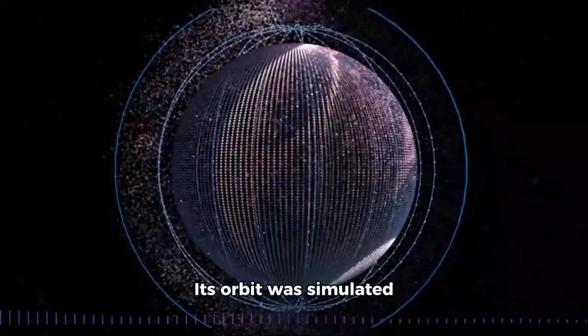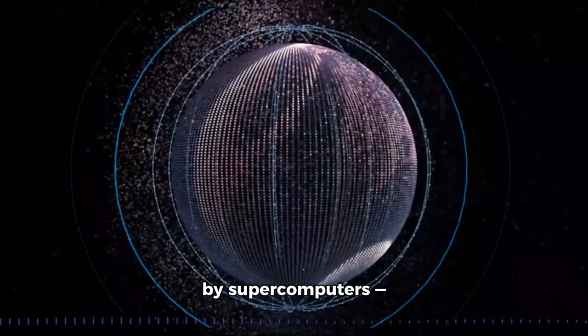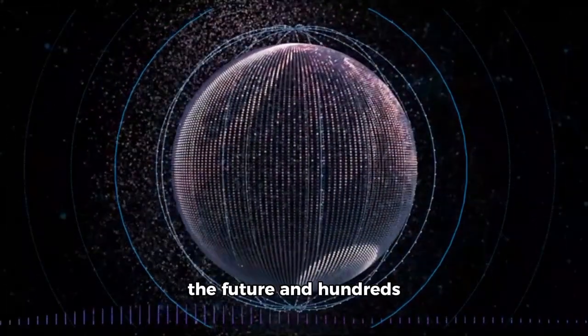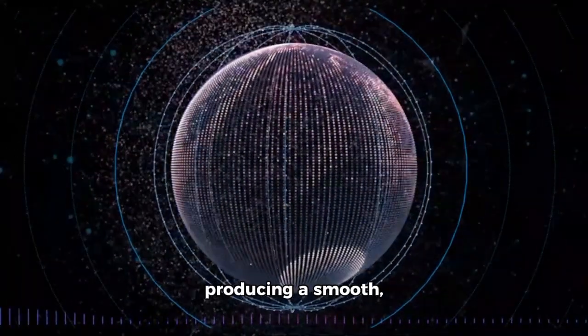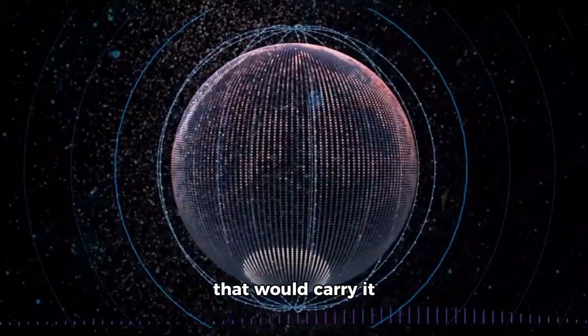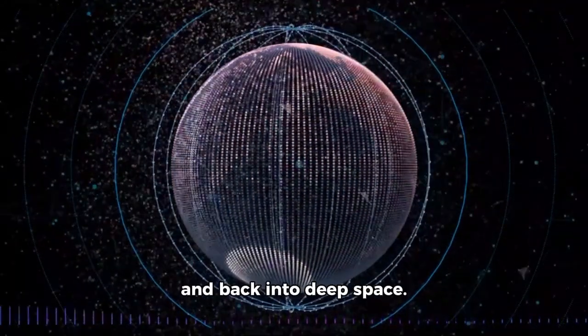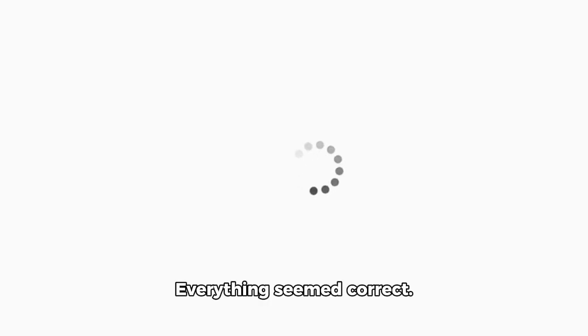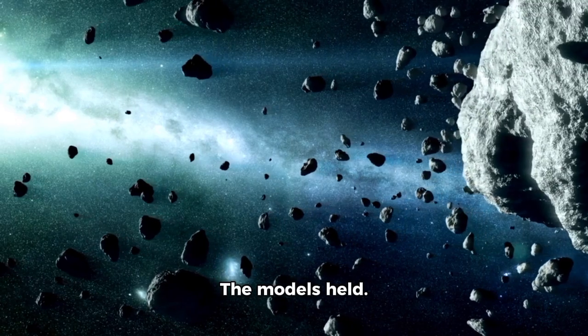Its orbit was simulated by supercomputers, thousands of years into the future and hundreds of years into the past, producing a smooth hyperbolic trajectory that would carry it beyond the outer planets and back into deep space. Everything seemed correct. The models held. The mechanics were sound. Then, one evening, the object disappeared.